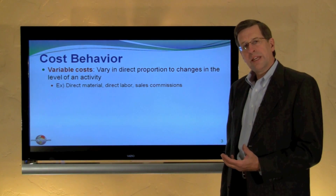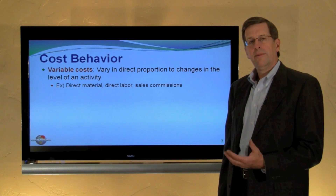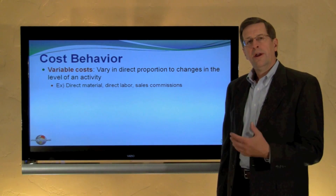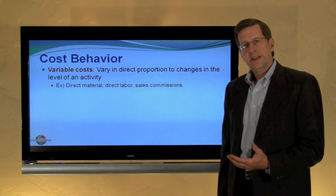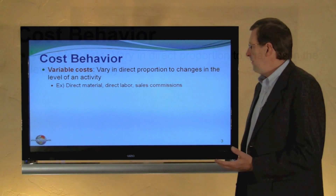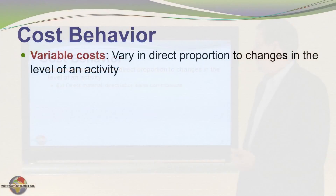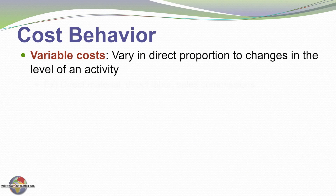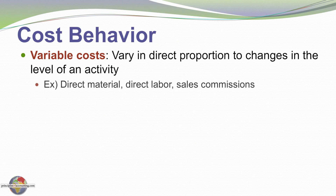Costs can be generally described as variable in nature or fixed in nature. Variable costs are those that vary in direct proportion to changes in the level of activity. Examples are direct material, direct labor, sales force commissions — things of this nature.